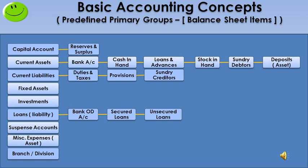Next, miscellaneous expenses asset — it is a primary group. Any expense incurred during the formation of a new business comes under this group. Such expenses are shown on the asset side of the balance sheet and written off over a period of time. Next, branch and division — it is a primary group. If a company has more than one affiliate, associate concern, or subsidiary, transactions related to them come under this primary group.